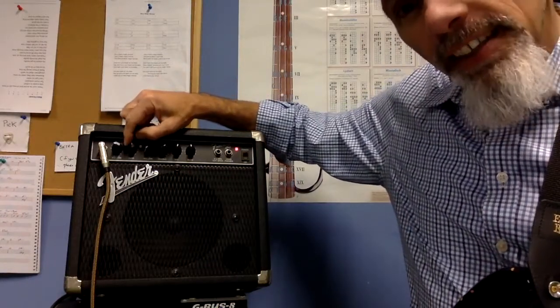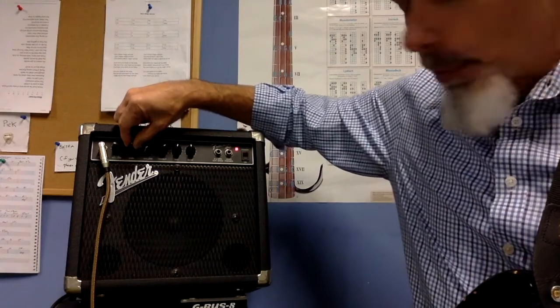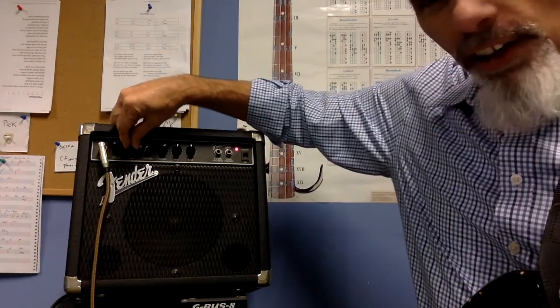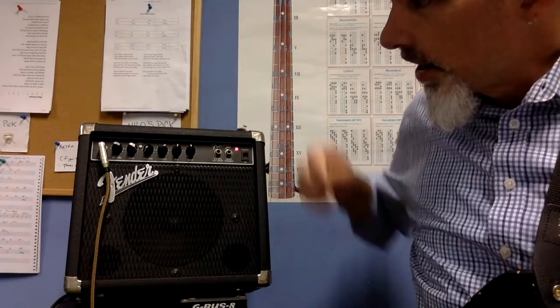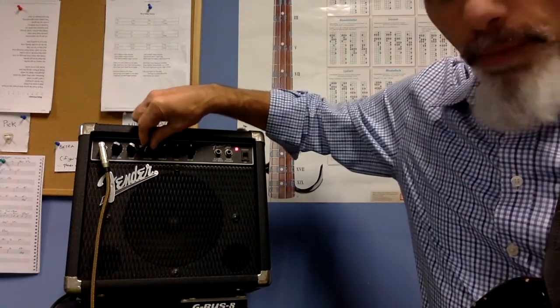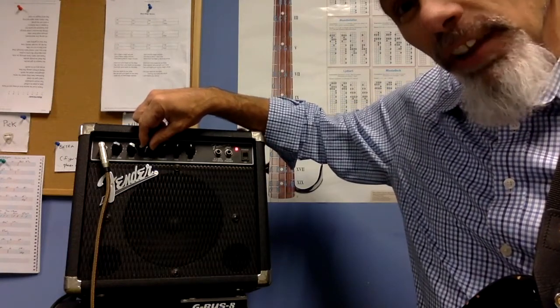I control that distortion sound by the gain, which actually operates also as a volume. So you can kind of hear that buzz. Now I have meaner distortion. You can hear it. But the volume also went up. So if I bring more gain and more distortion, I've got to bring the volume down.